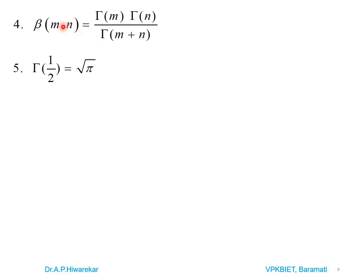The relation between Beta and Gamma function is: Beta(m,n) = Gamma(m)·Gamma(n) / Gamma(m+n).